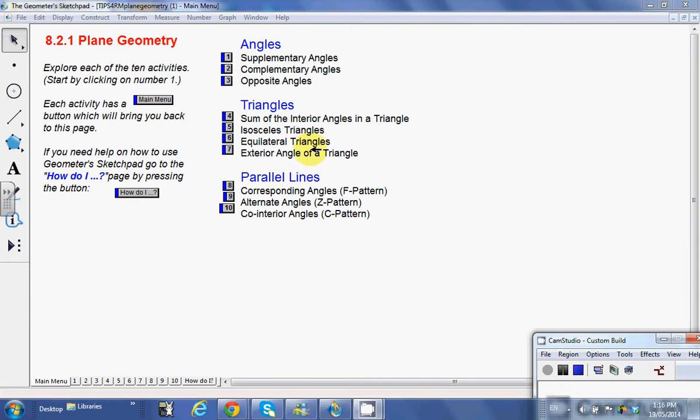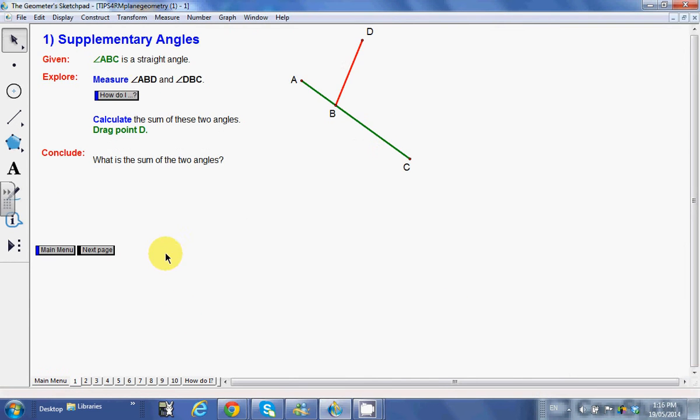So first one we're going to look at is the straight line. You might already know that the straight line is 180 degrees, and what we're asked to do here is measure angle ABD and angle DBC. To do that, all you do is click on A, B, and D, making sure B is in the middle.